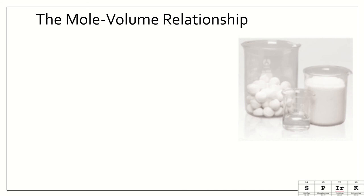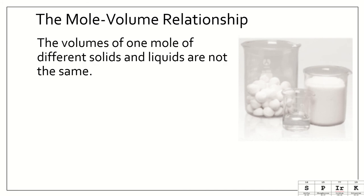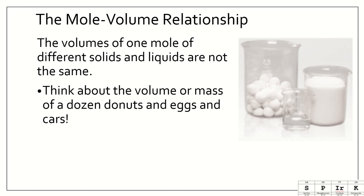Now is the mole volume relationship. The volumes of one mole of different solids and liquids are not the same. Think about the volume or mass of a dozen donuts compared to a dozen eggs compared to a dozen cars. The number of each is the same. There are 12 donuts, 12 eggs, and 12 cars. But they all have different masses, and they all have different volumes. Same is true for elements and compounds.